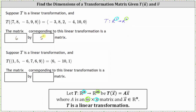For the second example, notice the input vector has six components and the output vector has three components. Here we have a transformation from R6 to R3. From our notes, N is equal to six and M is equal to three, indicating the transformation matrix is a three by six matrix.